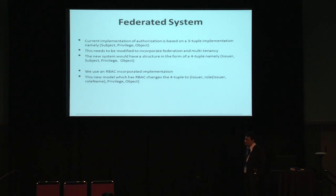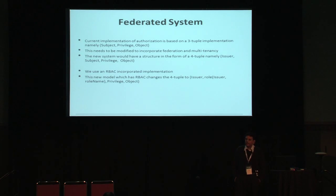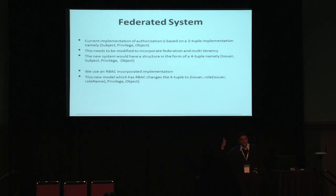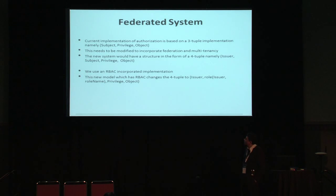The way we are doing this is we are changing the current implementation of authorization rules. The current authorization is a three-tuple: subject, privilege, and object — that's who it is, the privileges, and the object they're trying to access. We are making two changes to turn it into a four-tuple.